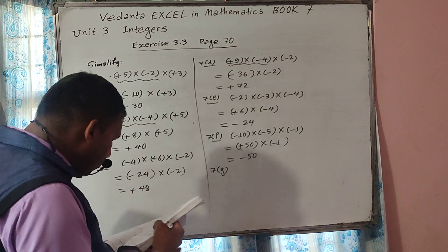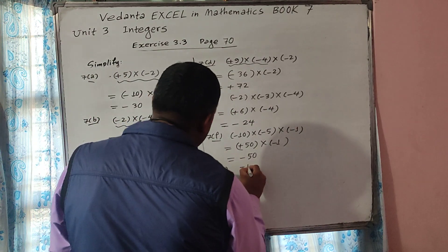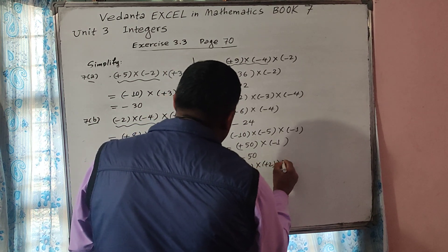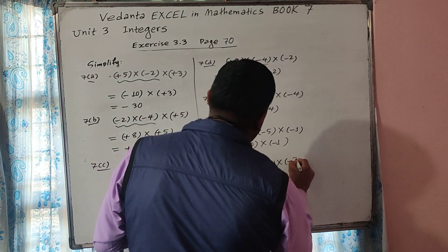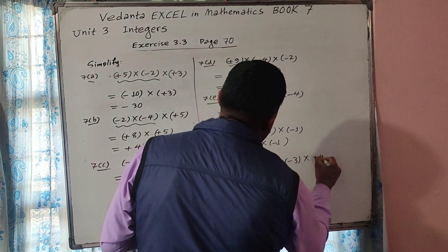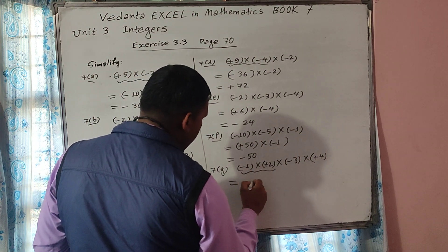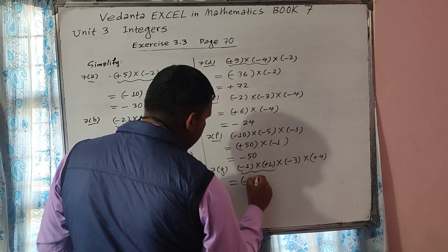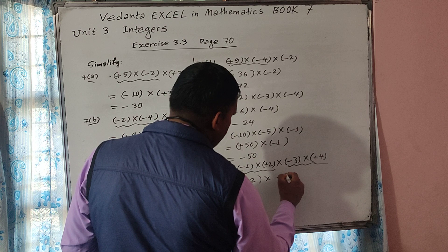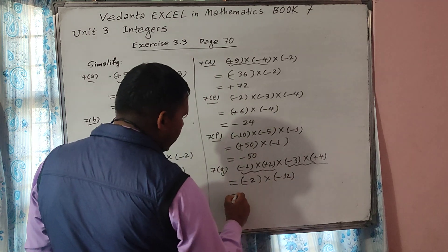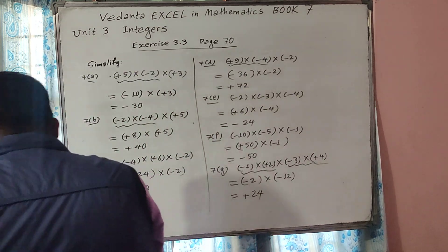Now 7G: minus 1 into plus 2 into minus 3 into plus 4. Working through the sign pairs — the result through the chain of multiplications gives plus 24. So plus 24 is the answer.